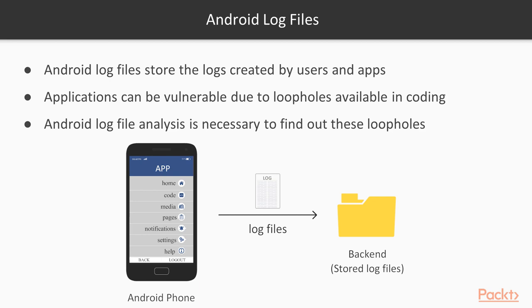For example, if you are a pen tester trying to get information about the vulnerability of an Android app, you can visit the Android app, it will create some logs, and those logs will be stored inside the log files. The pen tester can then analyze the log files to determine if there is any vulnerability. If a vulnerability exists, the log files will contain some secret or sensitive information.